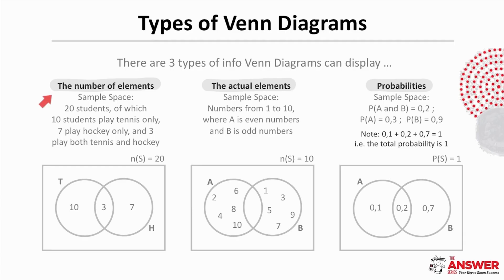So first let's look at when the information displayed is the number of elements. Here we have 20 students in this sample space, 10 of whom play tennis only, seven play hockey only and three play both tennis and hockey. As you can see the number of students is given in each case.